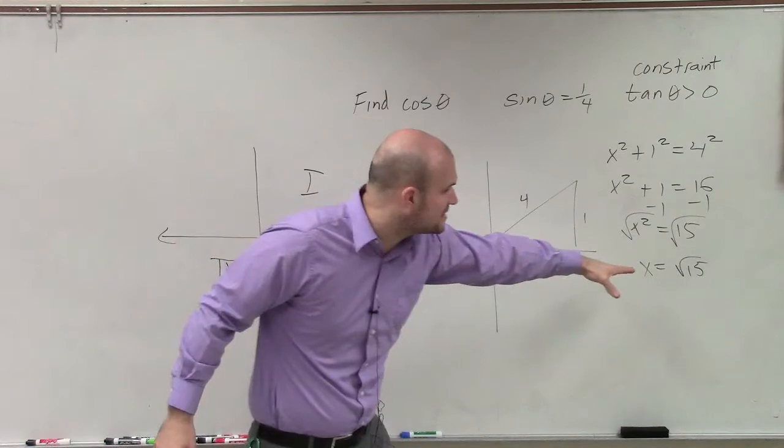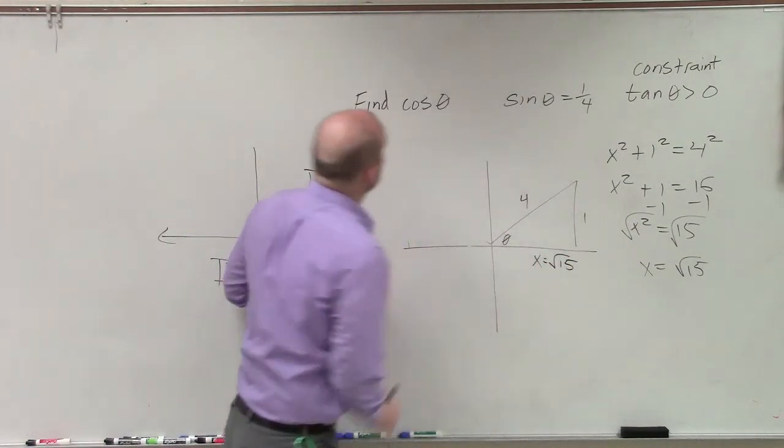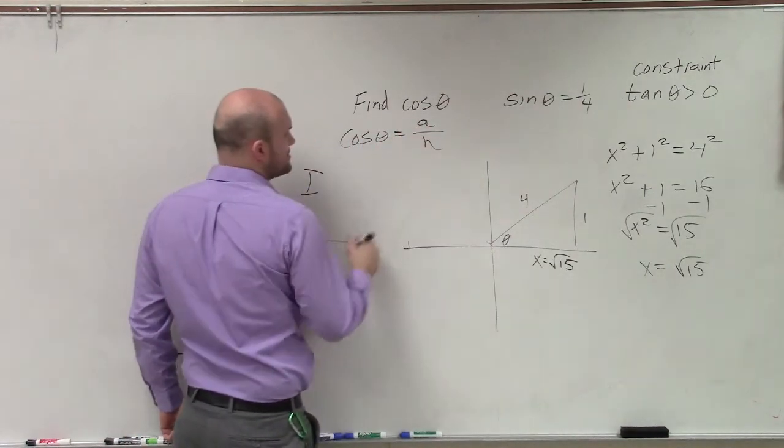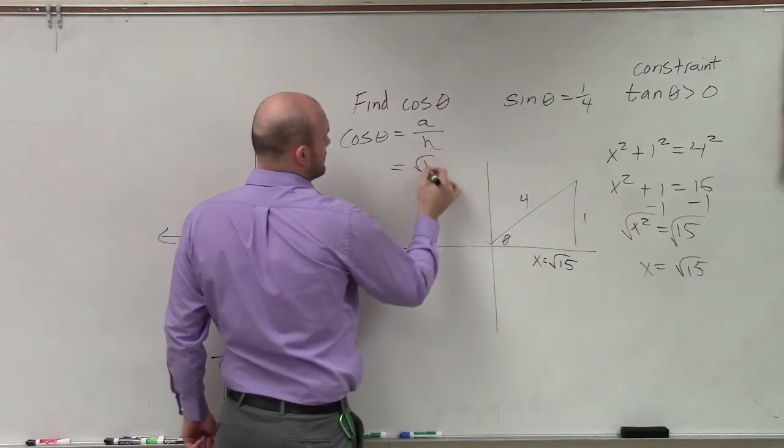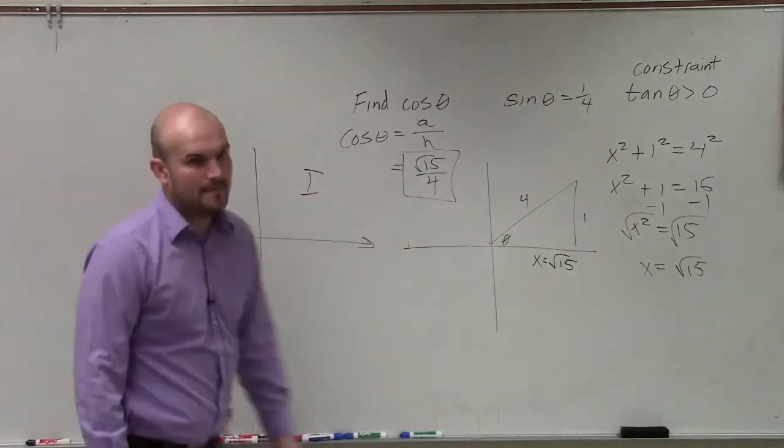Therefore, it's going to be a positive square root of 15. So therefore, this is square root of 15. The cosine of theta is adjacent over hypotenuse. So therefore, that is my adjacent over my hypotenuse. And there you go.